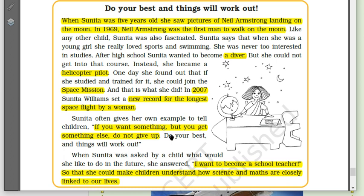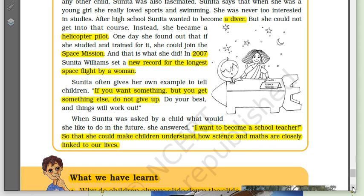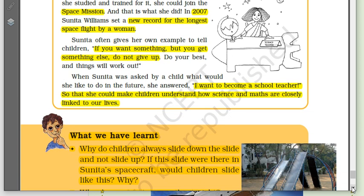In 2007, Sunita Williams set a new record for the longest space flight by a woman. She often gives her own example to tell children: 'If you want something but you get something else, don't give up — do your best and things will work out.' When asked what she would like to do in the future, Sunita answered: 'I want to become a school teacher, so I can make children understand how science and maths are closely linked to our lives.'